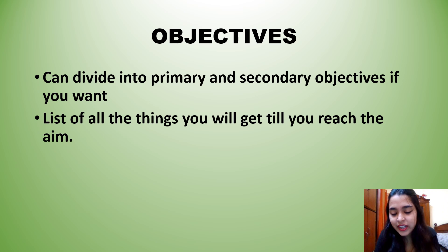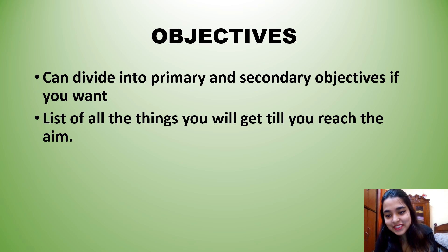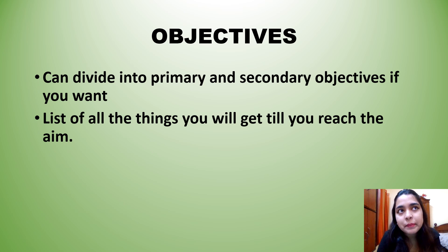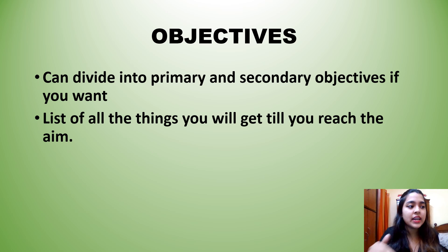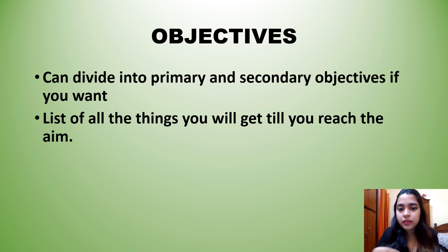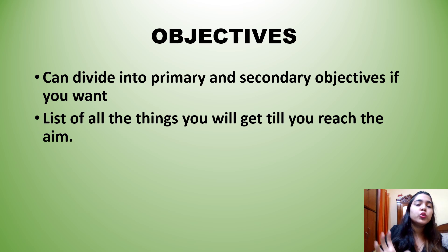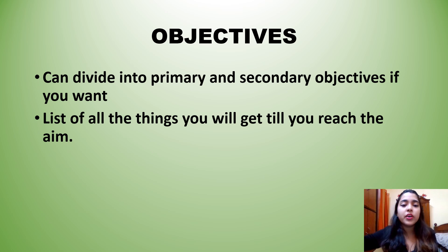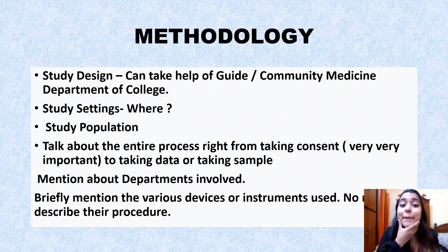For objectives, you can divide them into primary and secondary objectives. The primary objective is like the main aim, and the secondary objectives are things you find out while doing the project. You don't need to give ten objectives — two or three is enough.